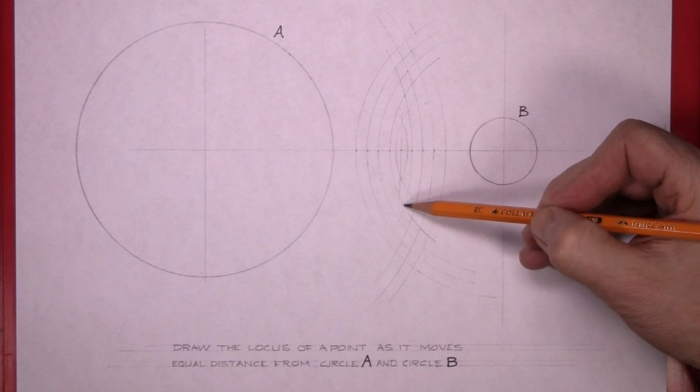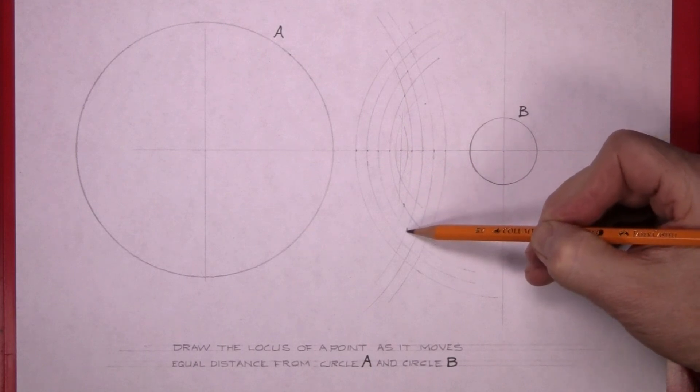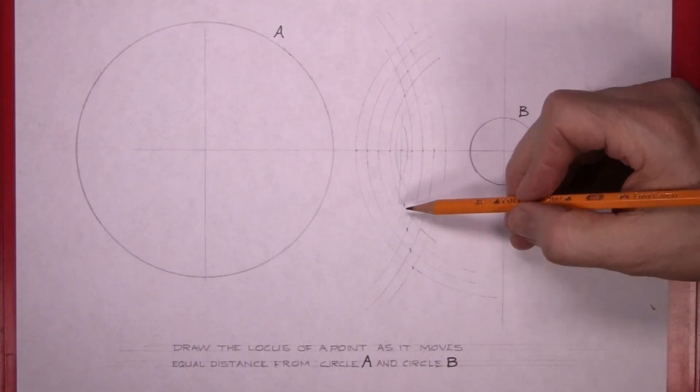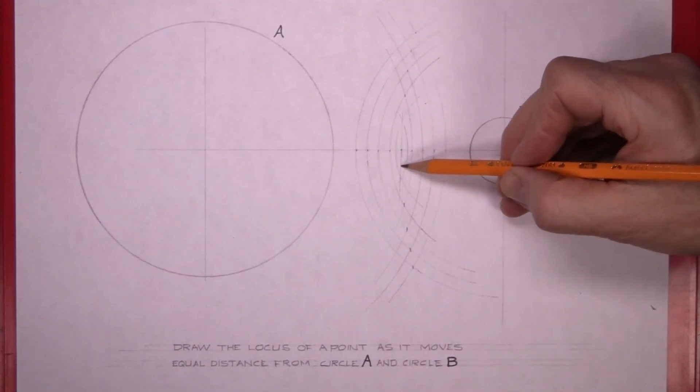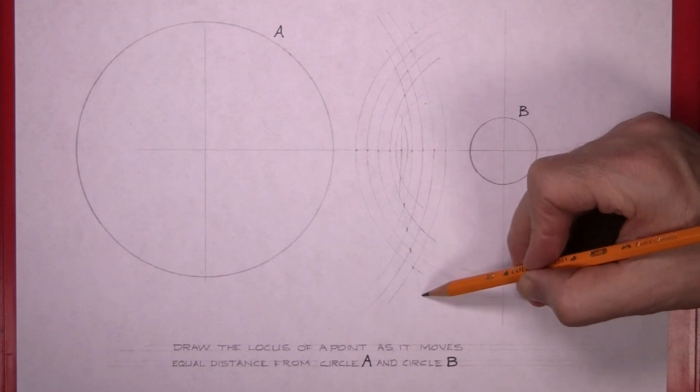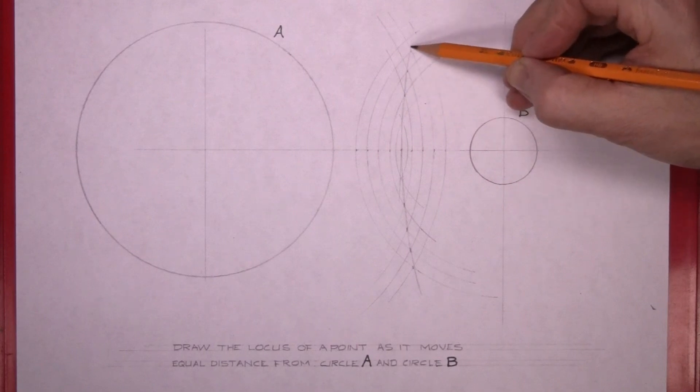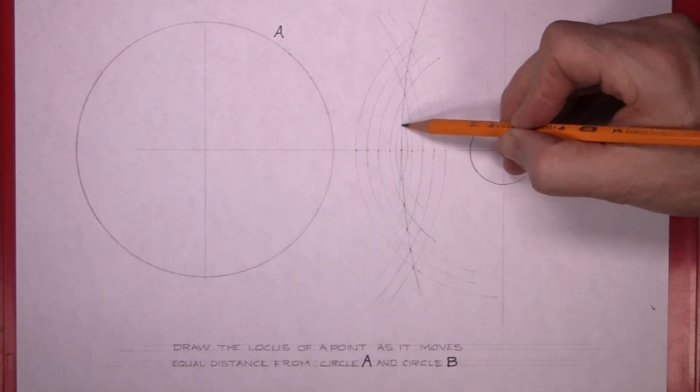So the same the lower side here. Follow where the circles meet and that gets you a freehand curve then through that gives you the path traced by the point as it moves equal distance from circle A and circle B.